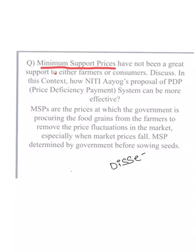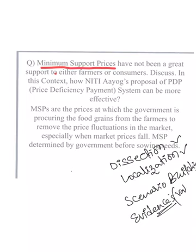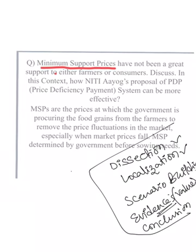When writing the main answer, we should follow five steps: first, dissection — dissecting the question; second, localization — restricting to the outline of the question; third, scenario building — covering the core part; fourth, evidences or evaluations — value additions like case studies; and fifth, conclusion. These are the five steps we should follow while writing main answers.